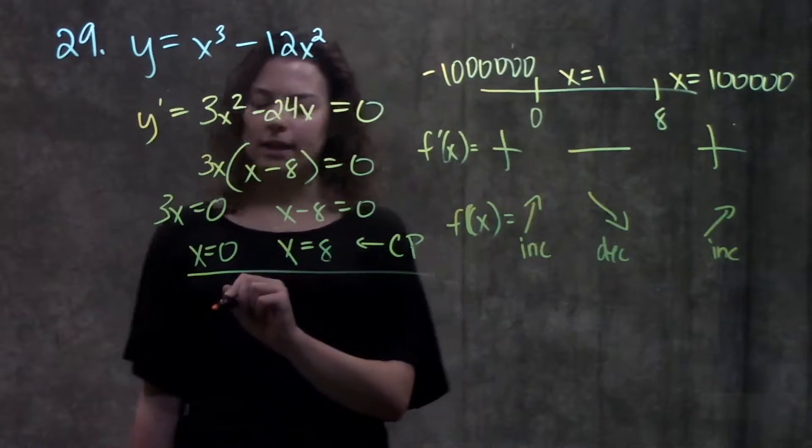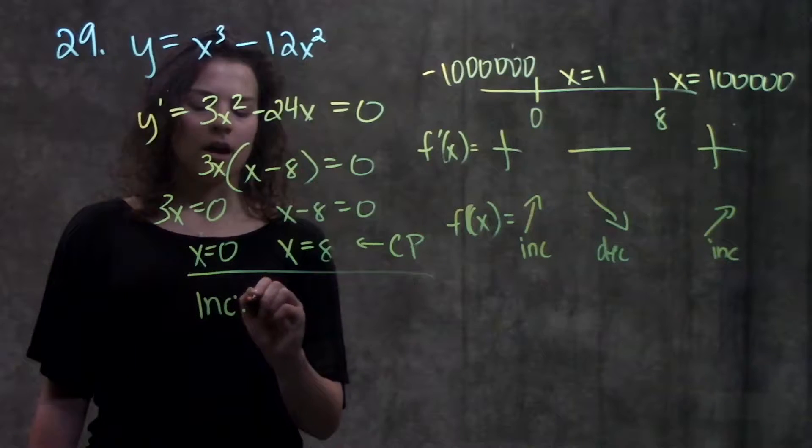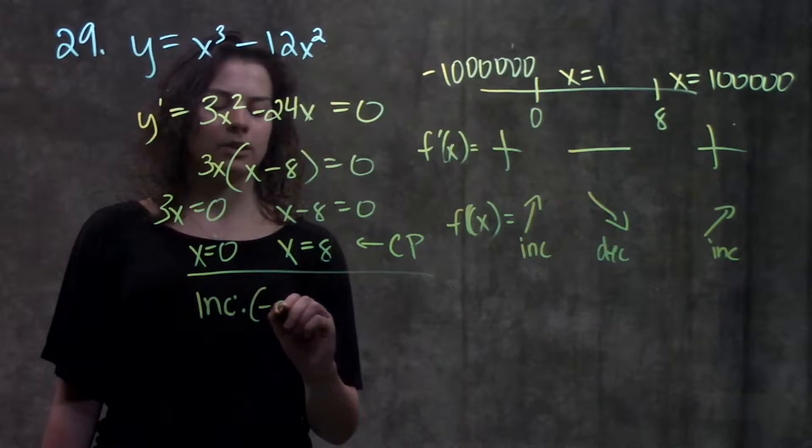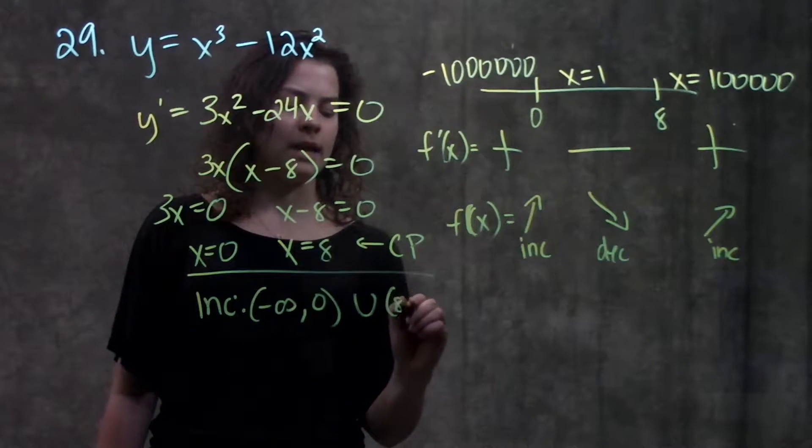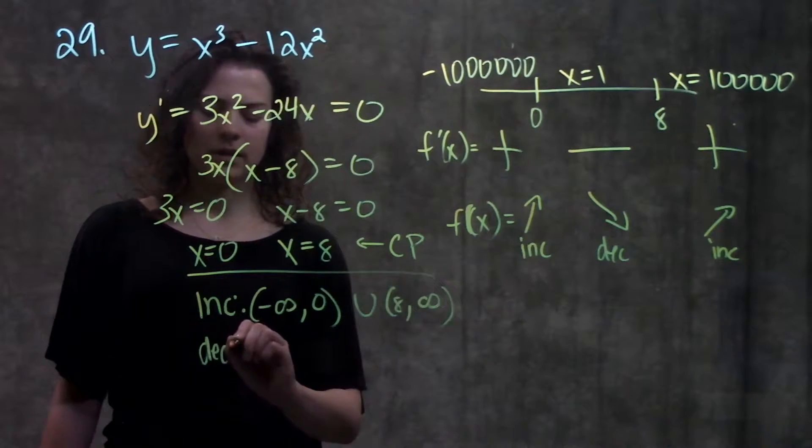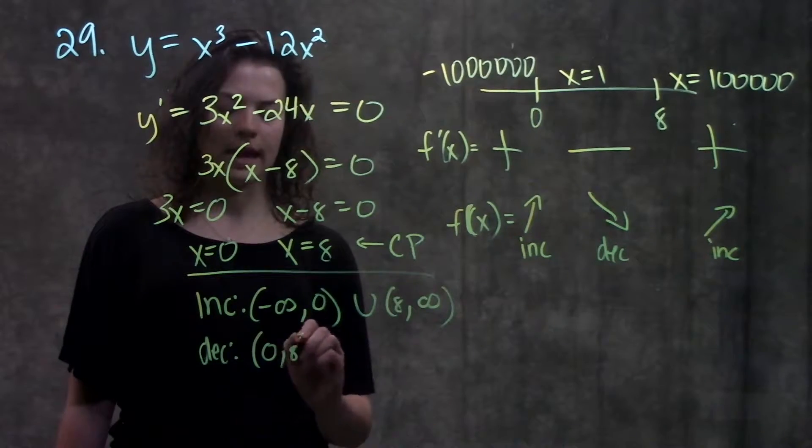I can say that my intervals of increasing and decreasing are: it's increasing from the interval negative infinity to zero, and on the interval eight to infinity. And it's decreasing on the interval zero to eight.